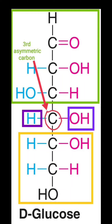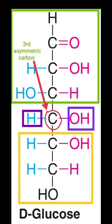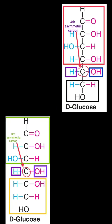The fourth carbon of glucose is the third asymmetric carbon. The content in the green box is one group, OH is one group, H is one group, and whatever is within the yellow box is a different group. So again, this fourth carbon is bonded to four different groups, and that is why it is also an asymmetric carbon.